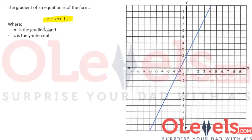So how would we exactly go about finding the equation of this line? Well, the first thing we need is the gradient. If we find the gradient of this line, we will find that the gradient is 2. So the value of m is 2. If you do not remember how to find the gradient of a line, I would recommend you revisit the previous video.